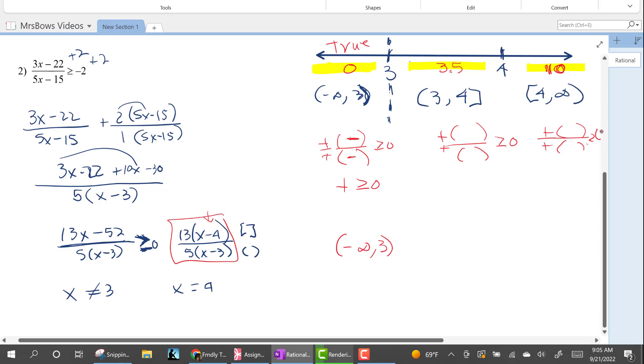Now let's put in 3.5. 3.5 is smaller than 4, so when you take 3.5 subtract 4, you get a negative 0.5. But 3.5 is bigger than 3, so 3.5 subtract 3 is positive 0.5. A negative divided by positive is negative, and then a negative times positive is negative. So is a negative number greater than or equal to 0? False.